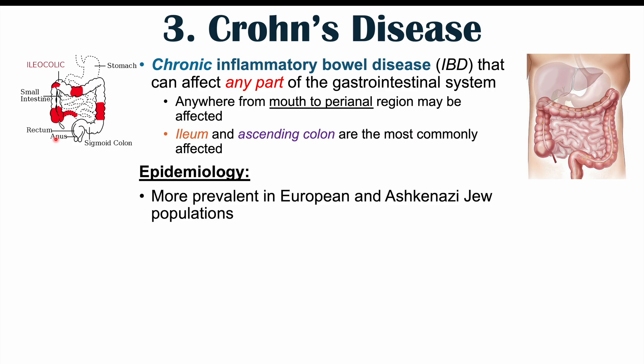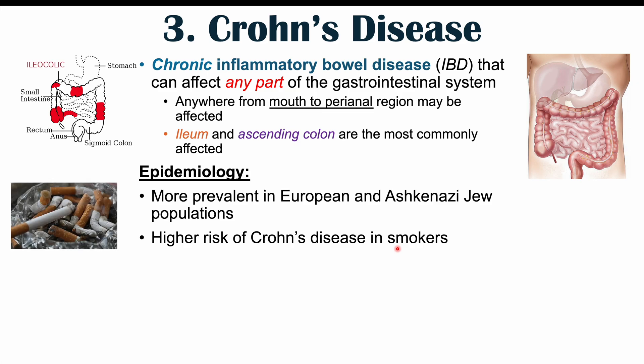Crohn's disease is more prevalent in European and Ashkenazi Jewish populations. There is a higher risk in smokers, which is in contrast to ulcerative colitis — another type of inflammatory bowel disease — where smokers can actually have a reduction in symptoms. Crohn's disease has two age groups with onset: those below age 30 and those above age 60.